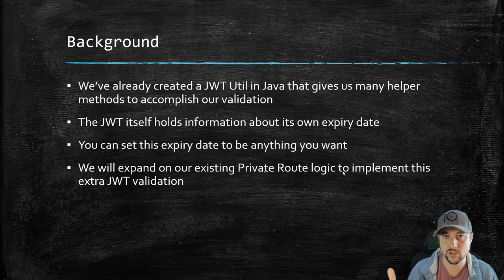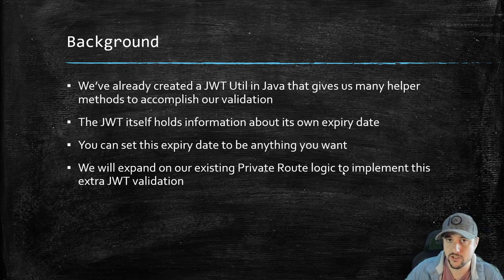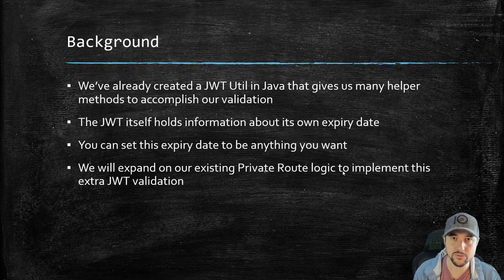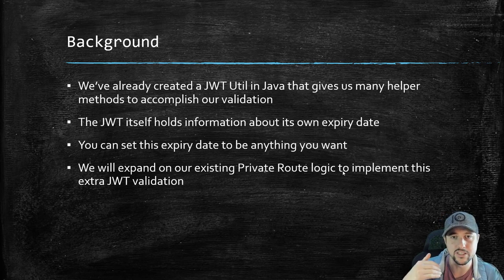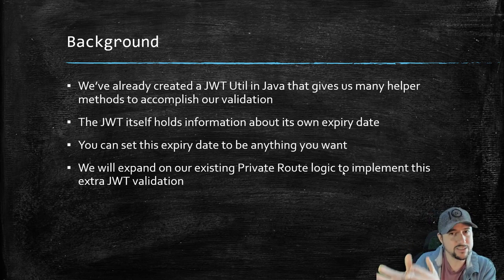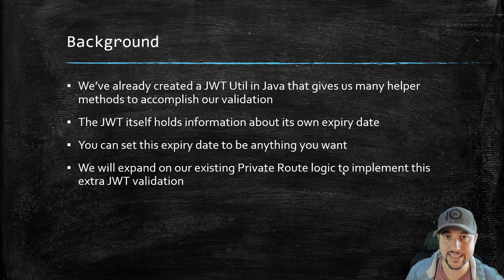So now our token is no longer valid, and I'm seeing bugs in the software. We're going to expand on our previous logic in React on the private route. The private route component's purpose is to essentially detect if someone is navigating to a URL that should be protected — in other words, you need to be logged in to access this URL. It checks whether you're logged in, and that's where our current bug is.